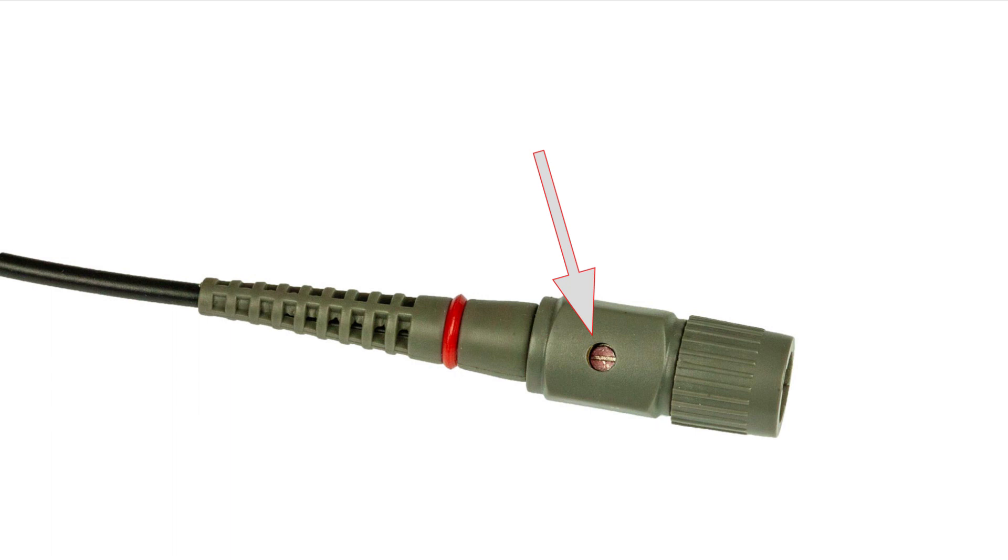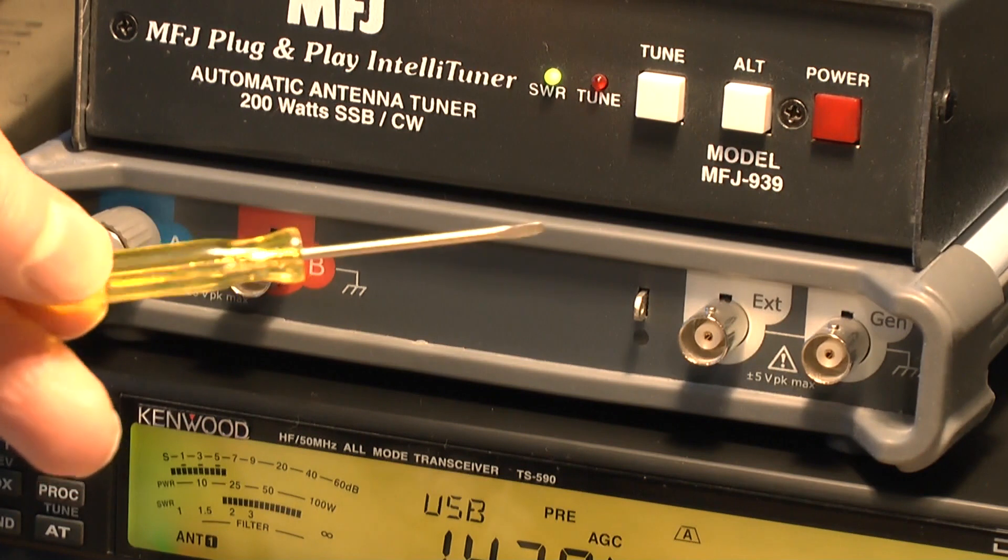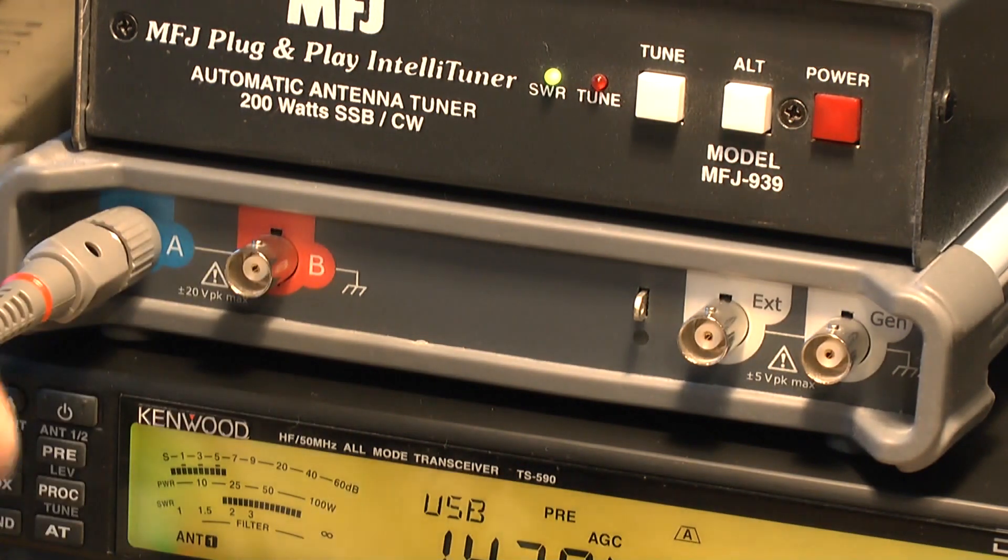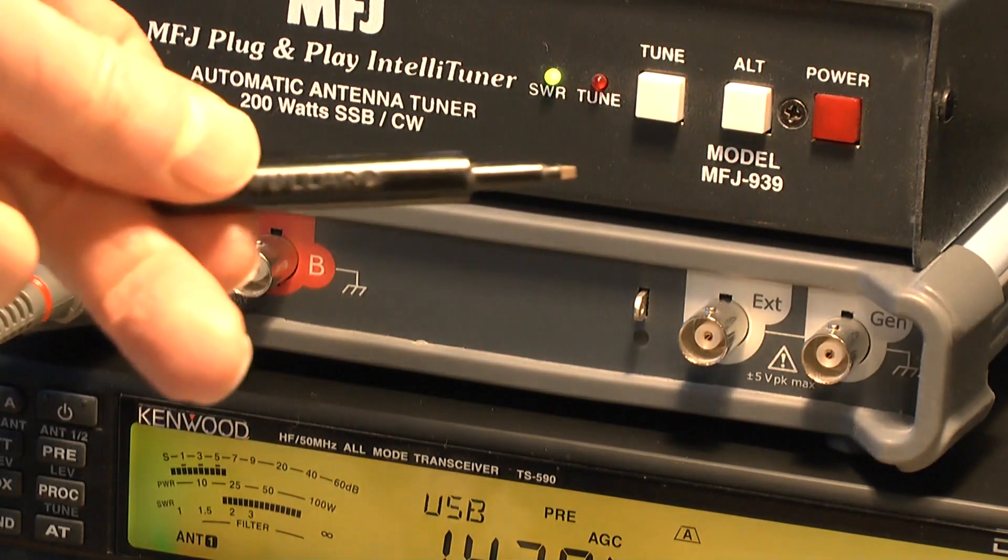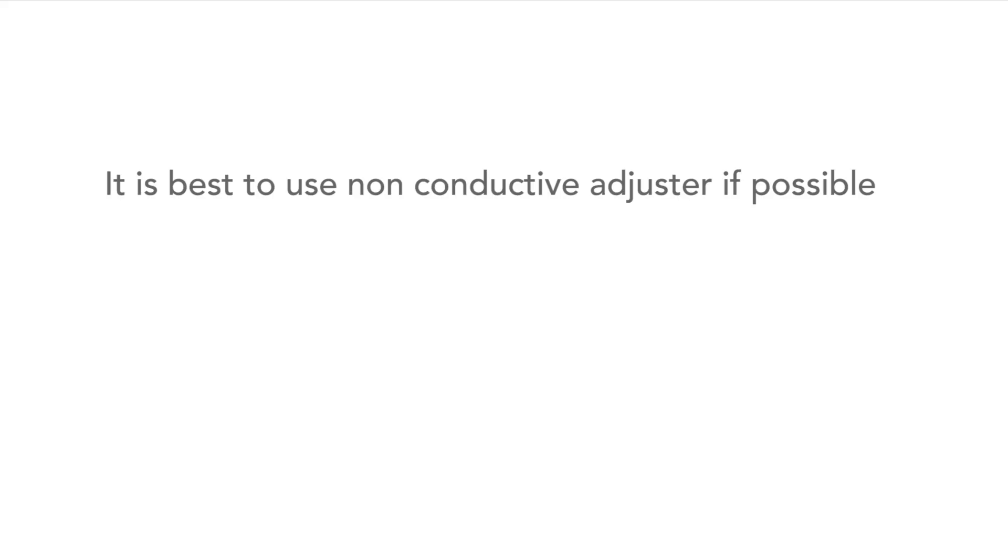A small adjuster with a screwdriver slot will be seen in a hole on the probe. Often people will use a small metal screwdriver for the adjustment, but ideally a non-conductive tool should be used because it's less likely to affect any readings as a result of any stray capacitances. It's not essential but a very good idea.